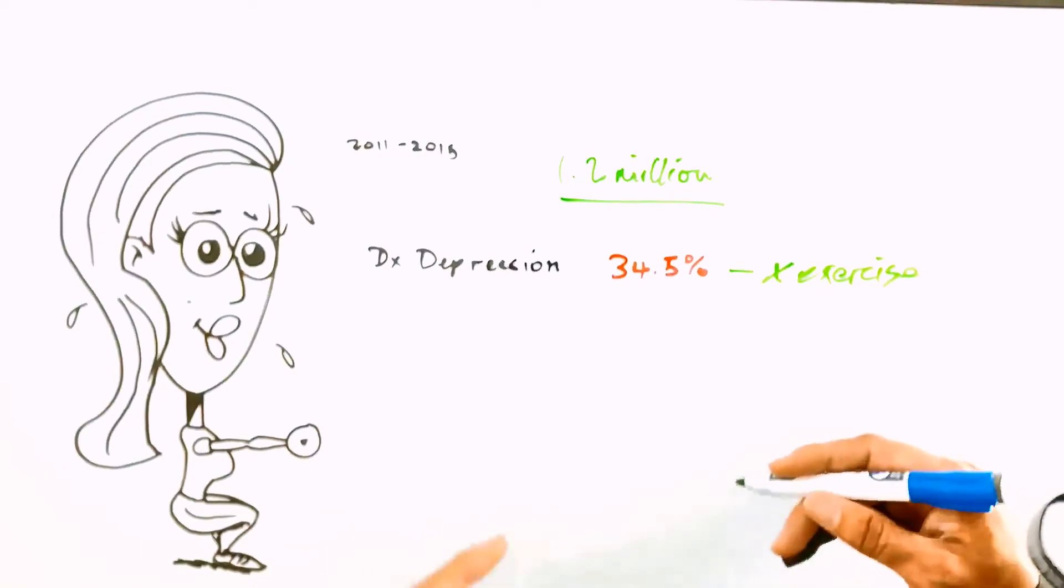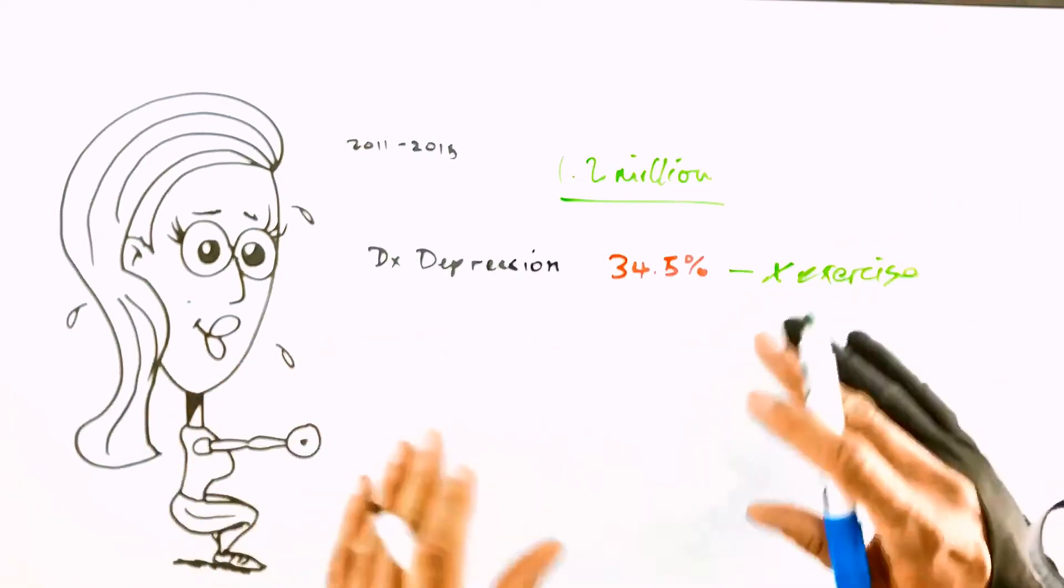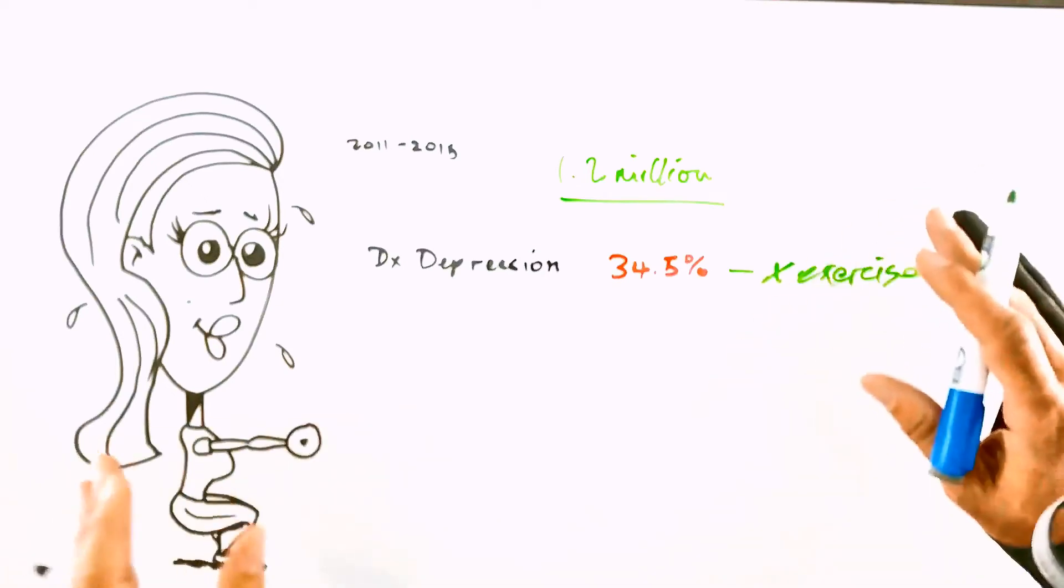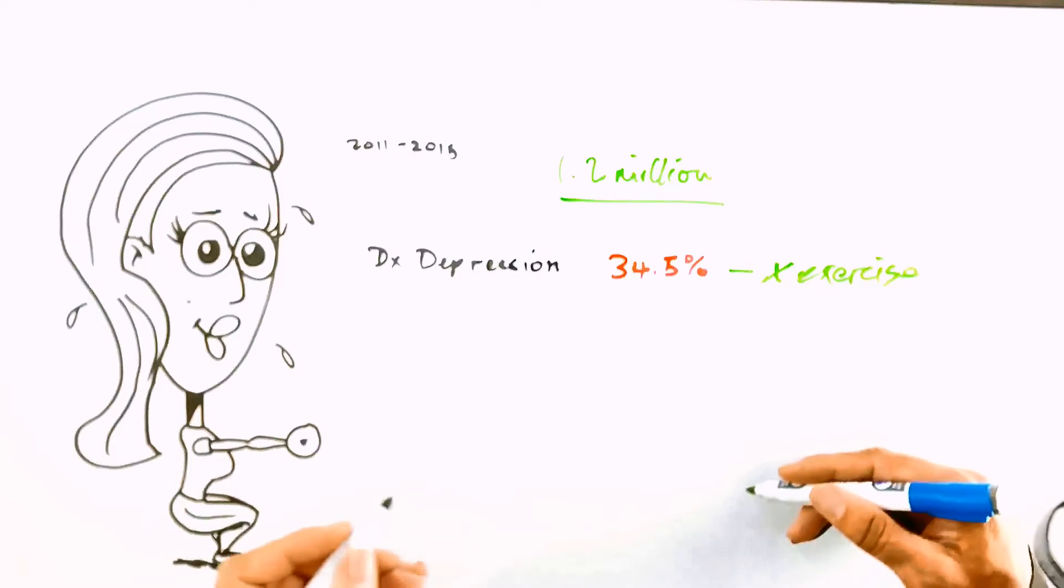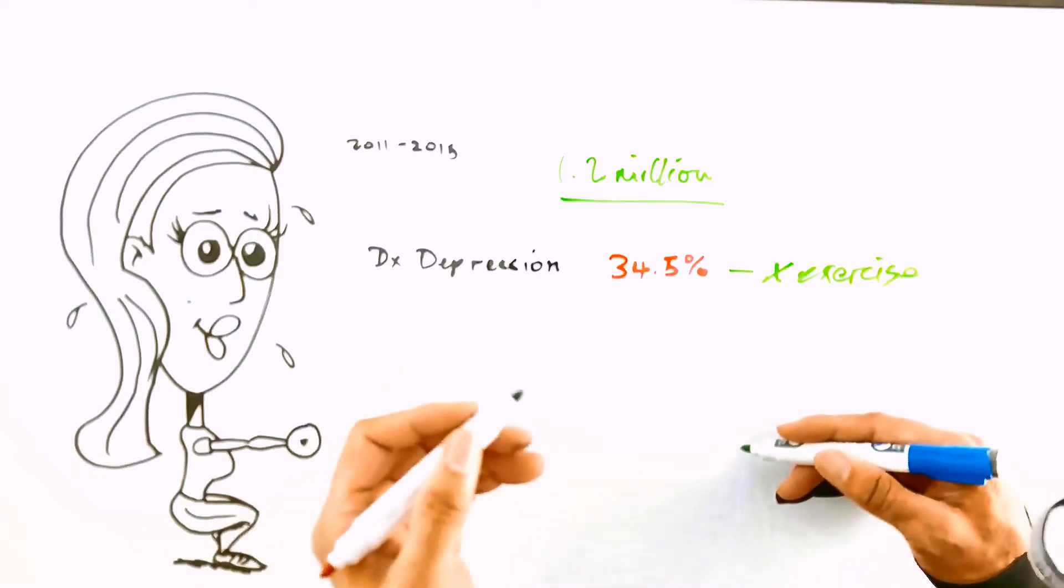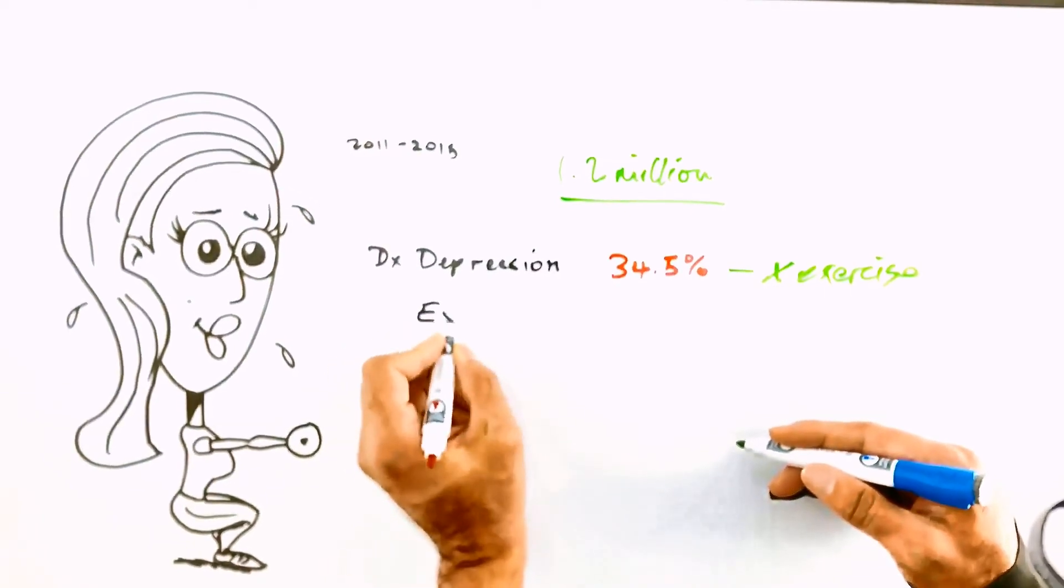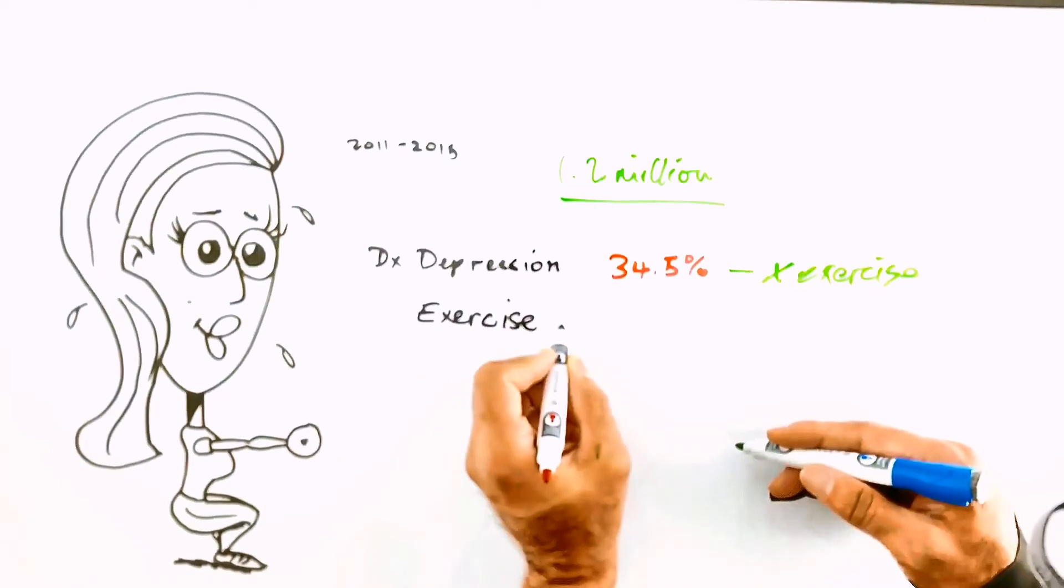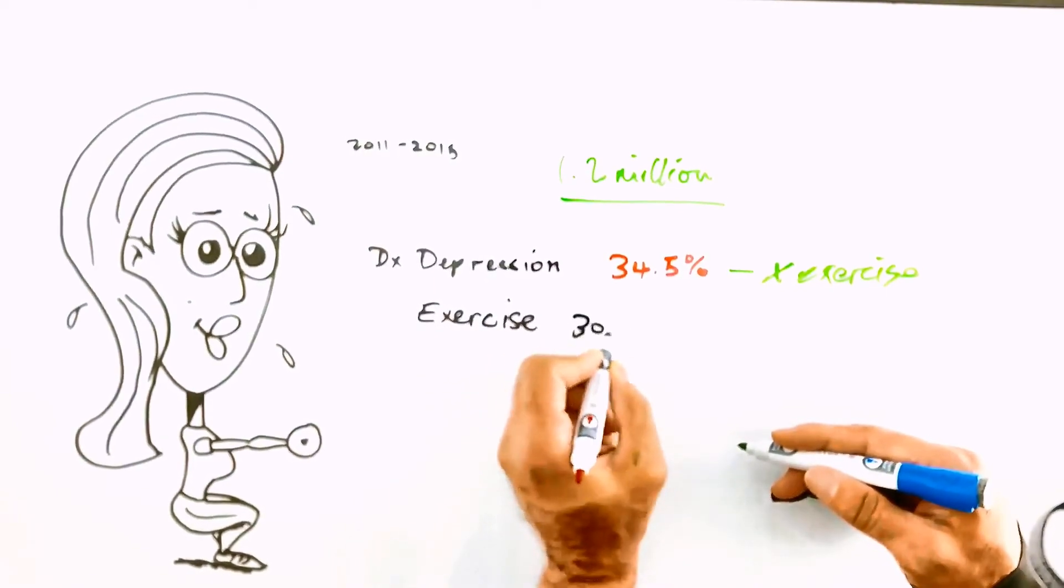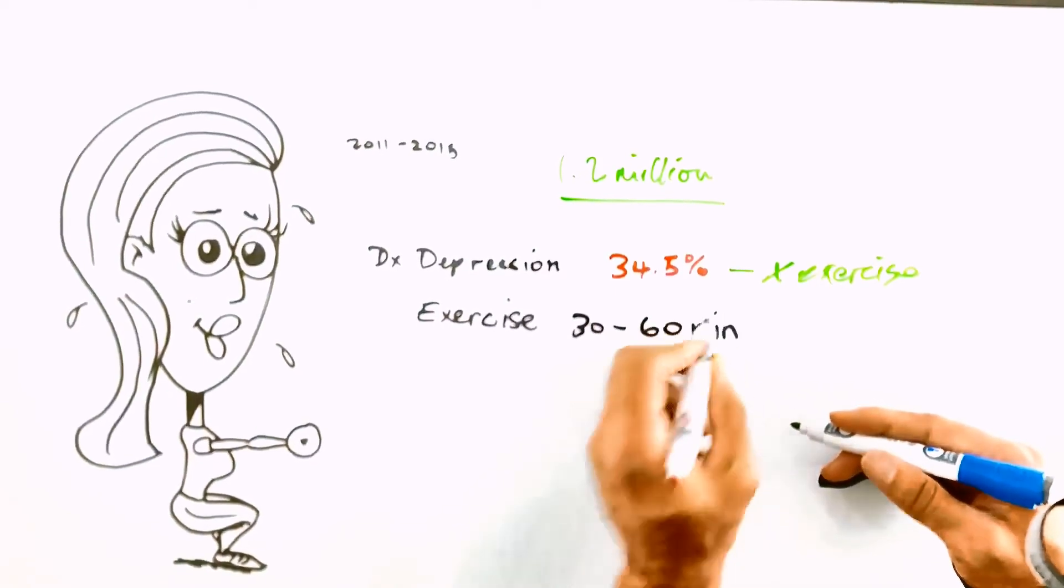What they found is that exercise of all types, independent whether it was swimming, cycling, rowing, jumping, skipping, tobogganing, whatever it was, that the lowest incidence of mental health burden of all types was with exercise, drumroll please, of duration 30 to 60 minutes.